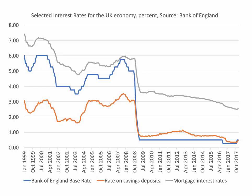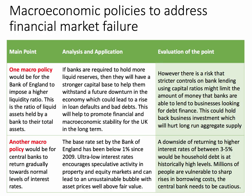The second macro point concerns the interest rate. This chart shows what's happened to the base rate in blue in the UK in recent times. For many years now, the base rate has been exceptionally low by historical standards. Other interest rates have come down including mortgage rates, and the rate of interest on savings deposits has been at or below 1% for more than a decade. Another macro policy would be for central banks, including the Bank of England, to return gradually towards normal levels of interest rates — moving away from ultra-low rates. The base rate has been below 1% since 2009. Ultra-low policy rates encourage speculative activity in property and equity markets and can lead to an unsustainable bubble in asset prices and house prices well above their fair value — a cause of macroeconomic financial instability and failure.